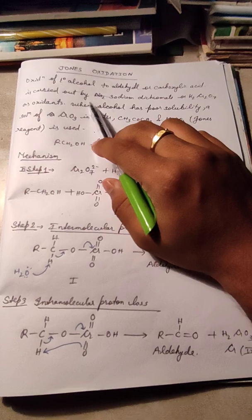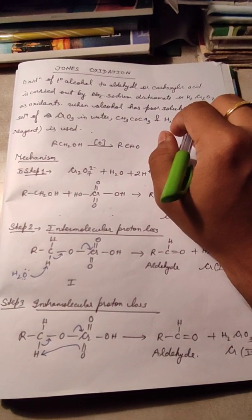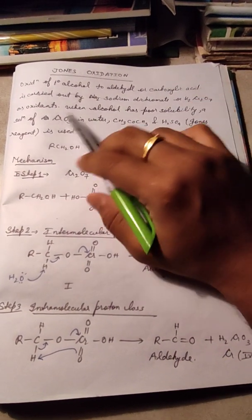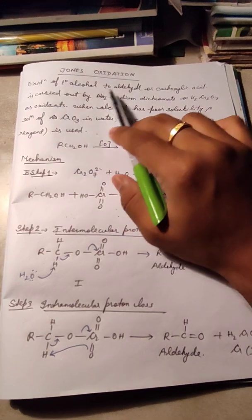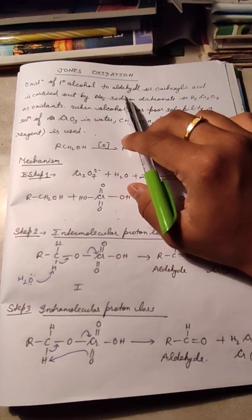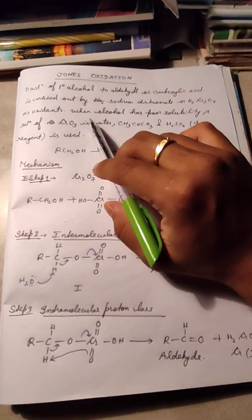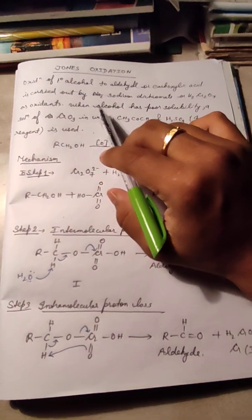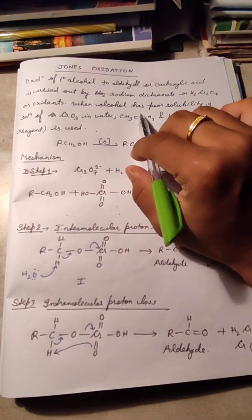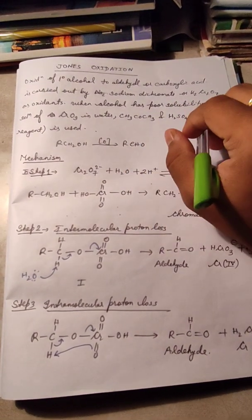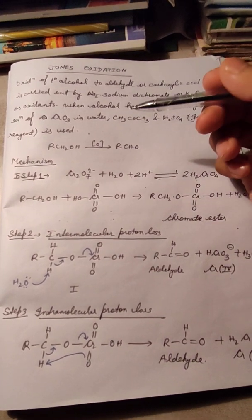Jones oxidation is carried out by sodium dichromate or potassium dichromate as oxidants. This is basically an oxidation reaction. When primary alcohol has poor solubility — meaning when the alcohol does not dissolve in water —